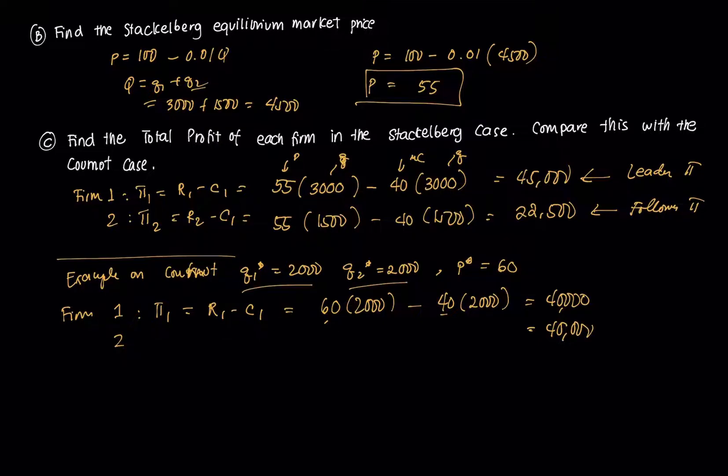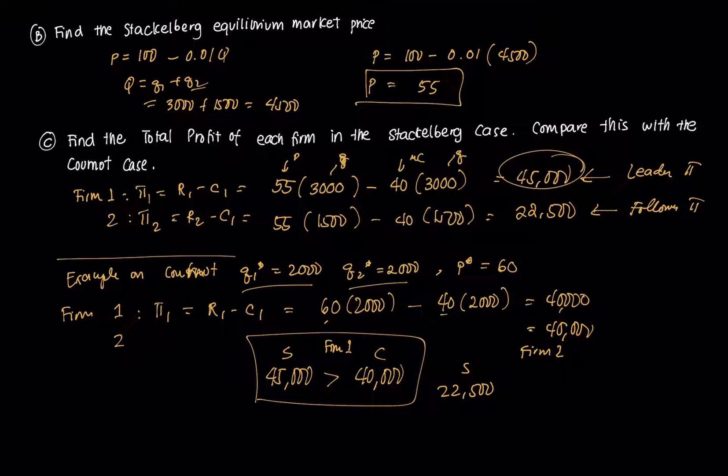And we note that since the leader, firm one has a first mover advantage, because it's the leader firm, its profit is greater. So for firm one, 45,000 is greater than 40,000. This is Stackelberg, this is Cournot. But for firm two, in Stackelberg its profit is only 22,500, but in Cournot it's 40,000. It seems better for firm two to operate in this Cournot, just a pure Cournot model in which they announce their output simultaneously, in which there's no information asymmetry. So I hope you were able to see the differences between Stackelberg and Cournot in this very simple example.